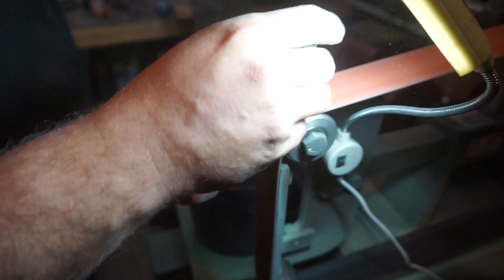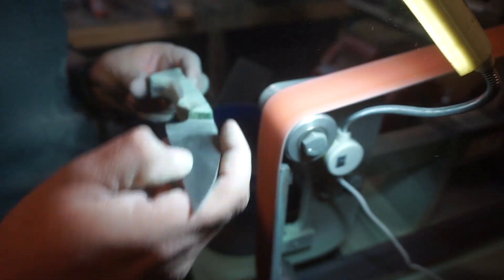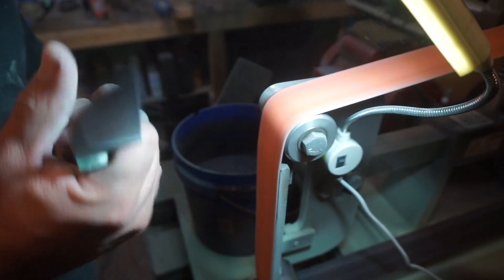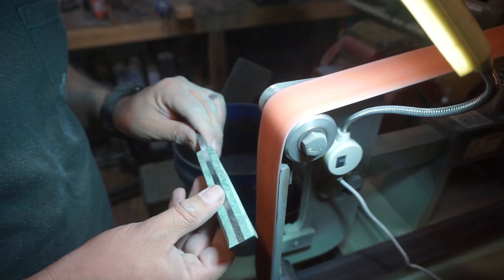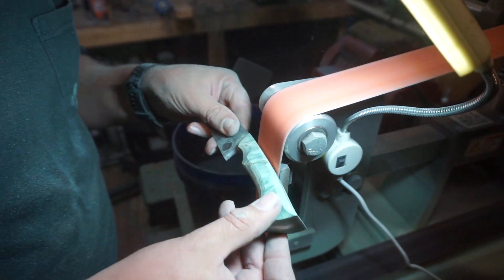Typically with a handle shape like this I would do a coke bottle style handle, but on this one I did not want to do that. I just wanted to do subtle contouring to make this really comfortable without doing any of the crazier style handles.